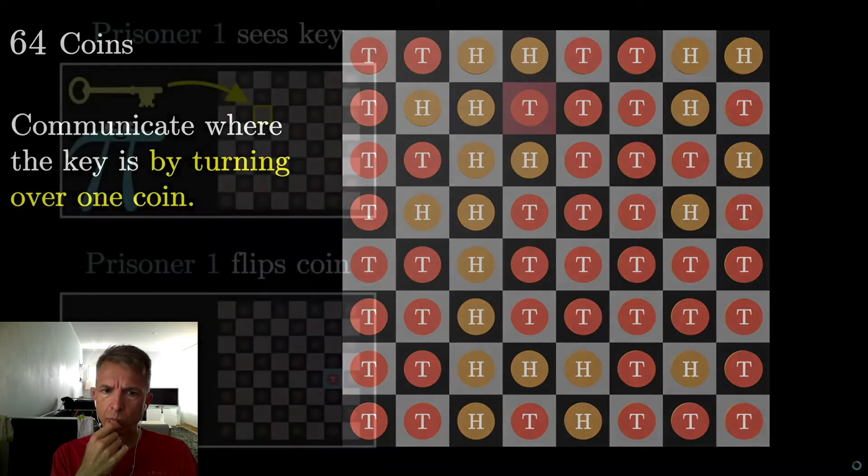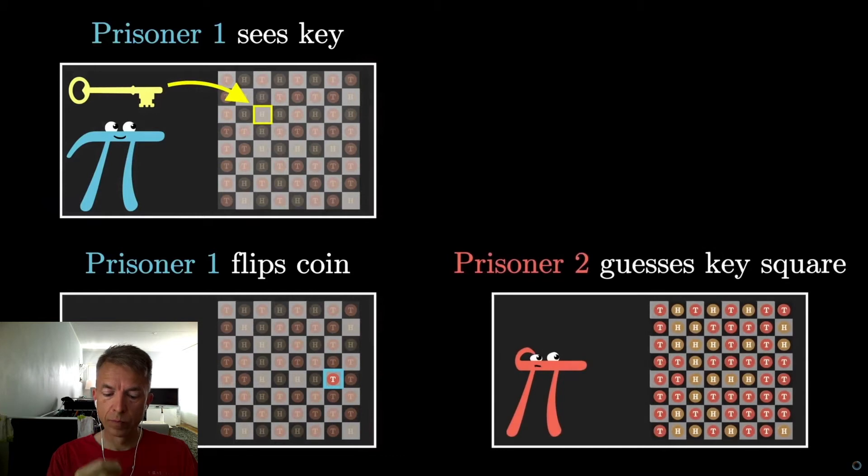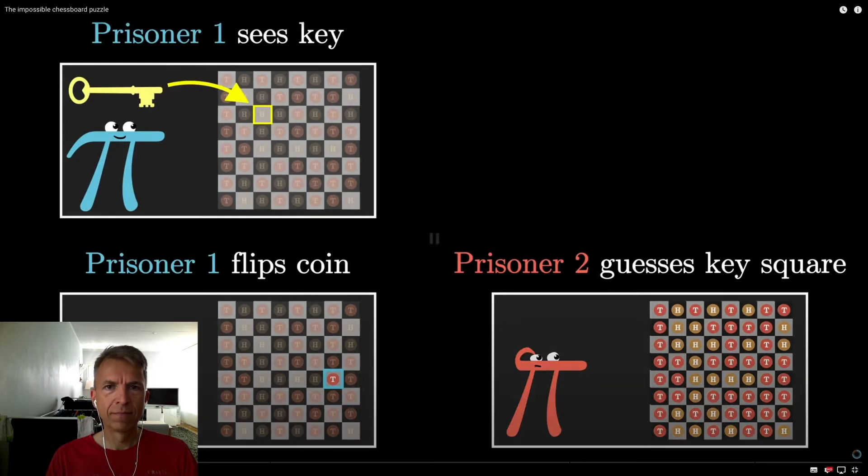At that point, you walk out, your fellow prisoner walks in, and with no information other than the set of heads and tails that they're looking at, which you've only barely tweaked, they're supposed to deduce where the key is hidden, potentially winning freedom for the both of you. Seems impossible, doesn't it?